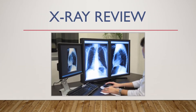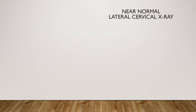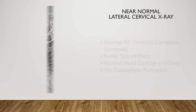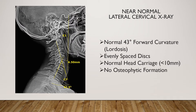So now we're going to take a look at some x-rays — some normal x-rays and some abnormal x-rays — so you have a better understanding when you look at your own x-rays. The first x-ray we're going to take a look at is a lateral or side view of the neck, or what we call the cervical spine. In the cervical spine, there are seven vertebrae, and we number these C1 to C7.